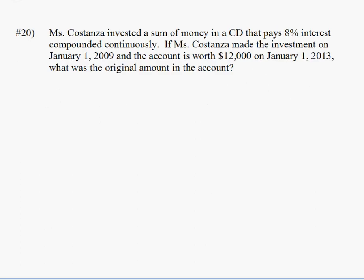Number 20, Mrs. Costanza invested a sum of money into a CD that pays 8% interest compounded continuously. That tells us we need to use the compounded continuous formula, which is A equals P times e to the exponent of rt. If Mrs. Costanza made this investment on January 1, 2009, and the account is worth $12,000 on January 1, 2013, that's four years later, what was the original amount in the account?